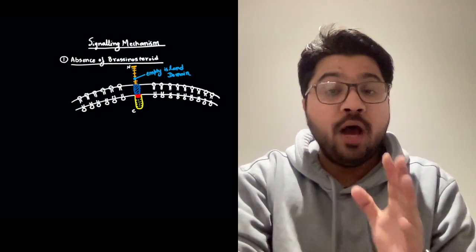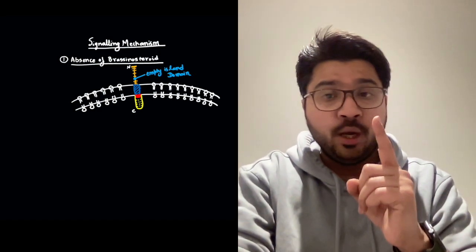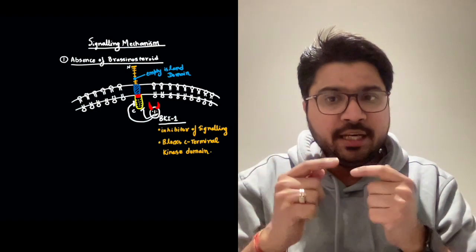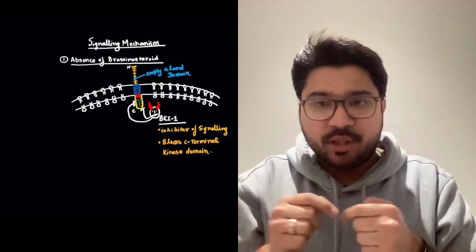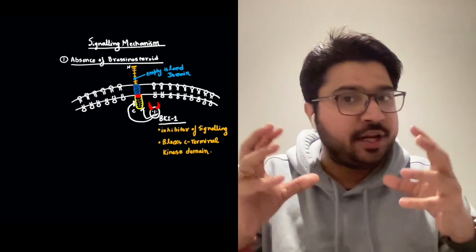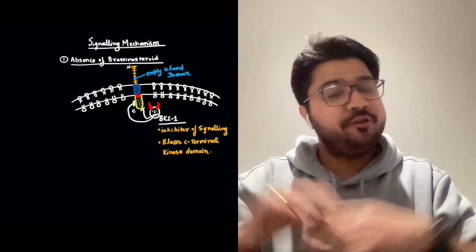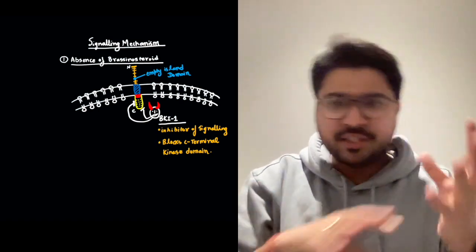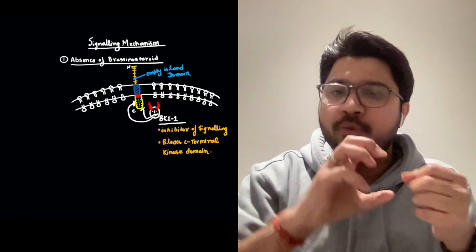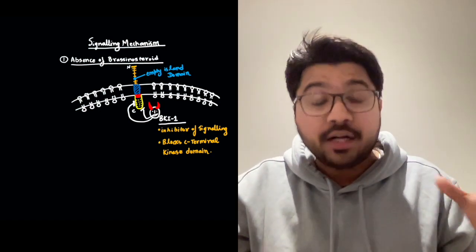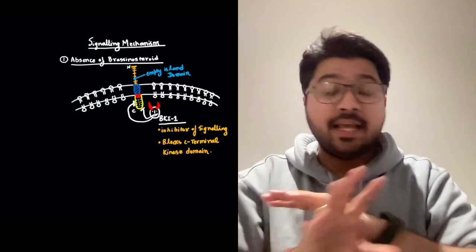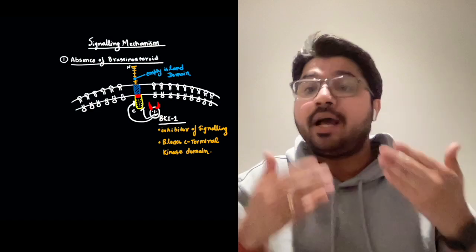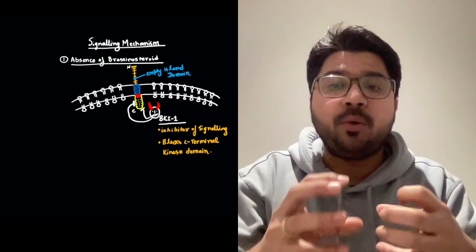Here comes the first villain of our story — a cytosolic protein called BKI1. It is an inhibitor of signaling. When no brassinosteroid is bound to the receptor, BKI1, revolving in the cytosol, binds to the kinase domain and shuts off its activity. With the kinase domain shut down, the entire receptor becomes inactive.